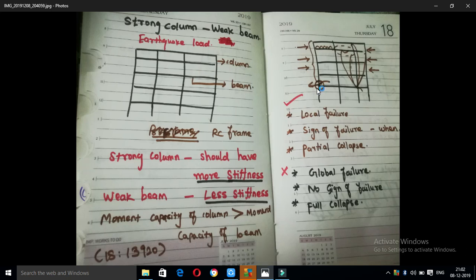Now the column is okay, but if the column is loaded in this direction, the column will collapse. What causes the column to collapse here? The column fails in this direction — a collapse. Now, if you see this beam, this beam is a failure. That is why the beam is called a weak beam.